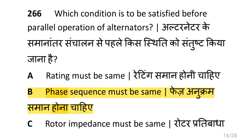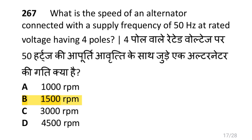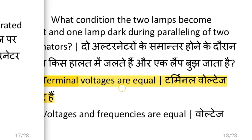Which condition is to be satisfied before parallel operation of an alternator, i.e. phase sequence must be the same? What is the speed of an alternator connected with a supply frequency of 50Hz at rated voltage having 4 poles, i.e. 1500 RPM?